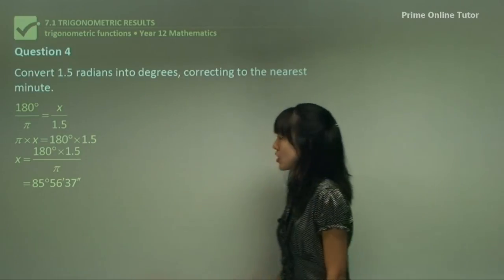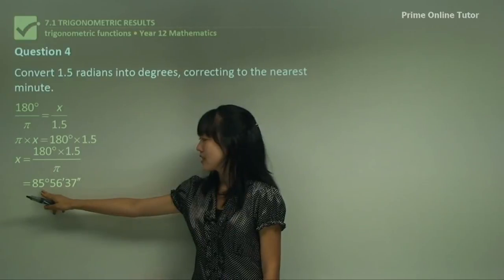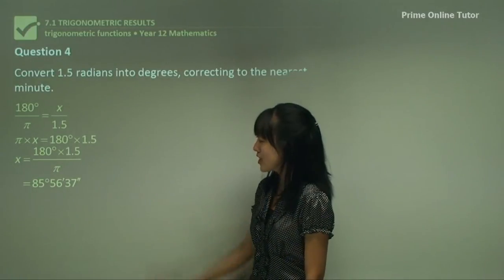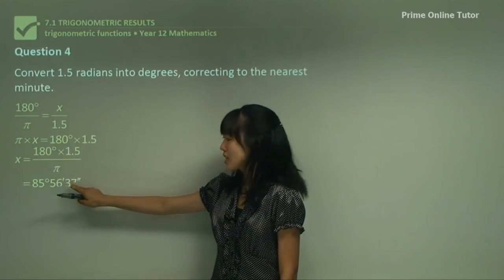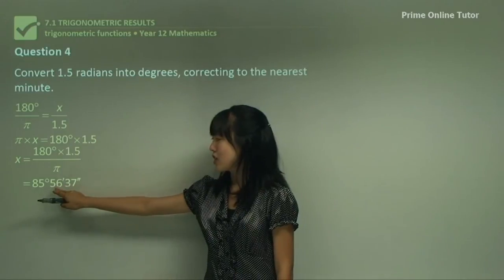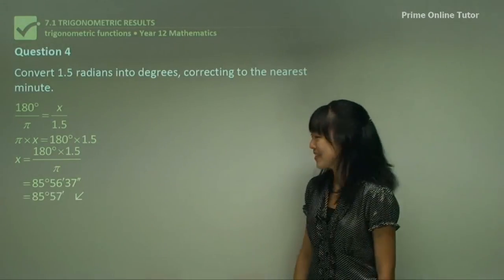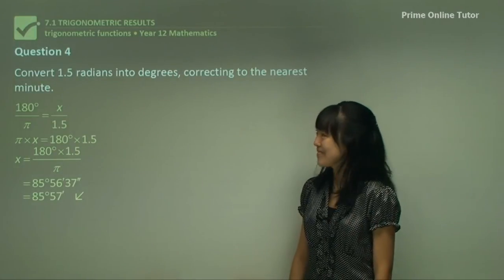The only thing different about this question is that we have to convert to the nearest minute. Just remember this is degrees, minutes, and seconds. When you want to round to the nearest minute you have to look at your seconds. There's 60 seconds in a minute, so if this number is greater than 30 then you move this number up by 1. So your final answer would be 85 degrees and 57 minutes. Excellent.